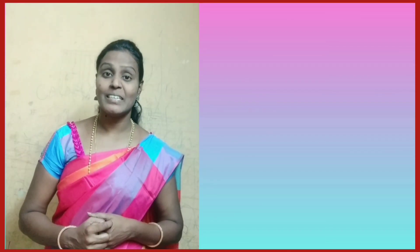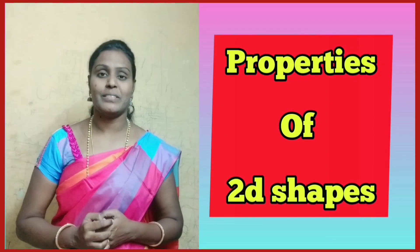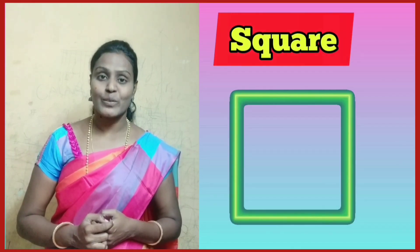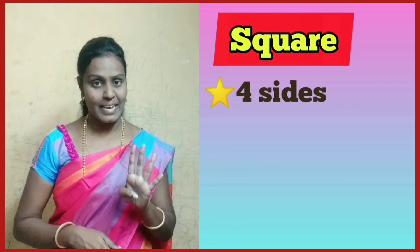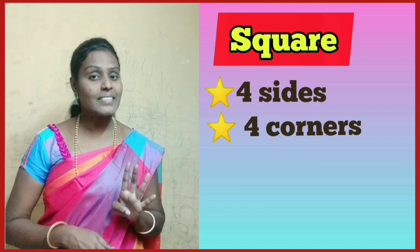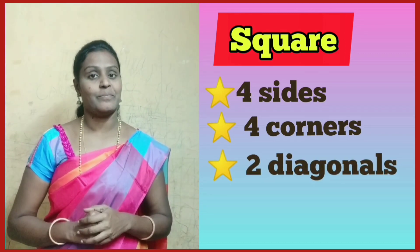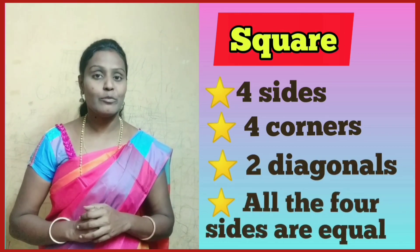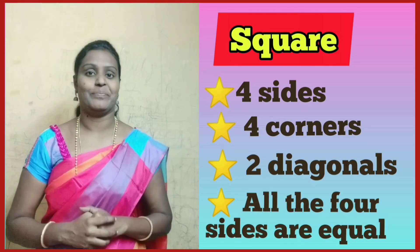Let us recall the properties of 2D shapes. Square has 4 sides, 4 corners and 2 diagonals. All the 4 sides are equal.